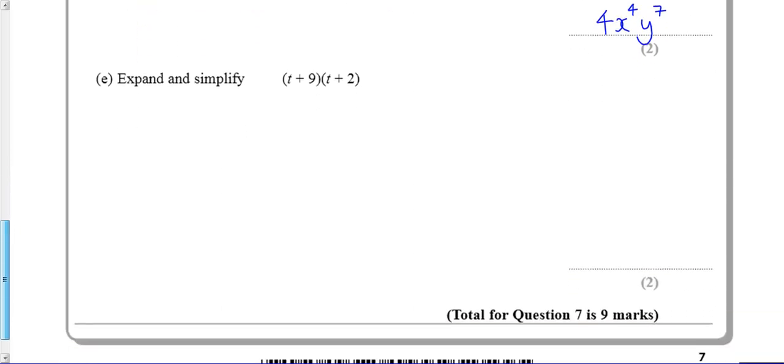And the last one - a little multiplication, double bracket. I like to do this as a grid where I have t and plus 9, the first bit along the top, and the second bit along the bottom, which gives me 4 possible answers. I'm going to put t times t is t squared, 2 times 9 is 18, 2 times t is 2t, t times 9 is 9t.